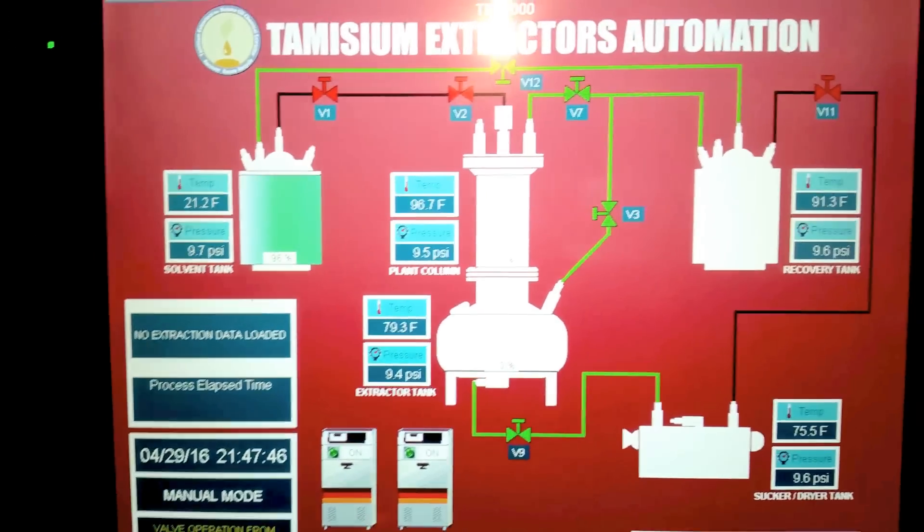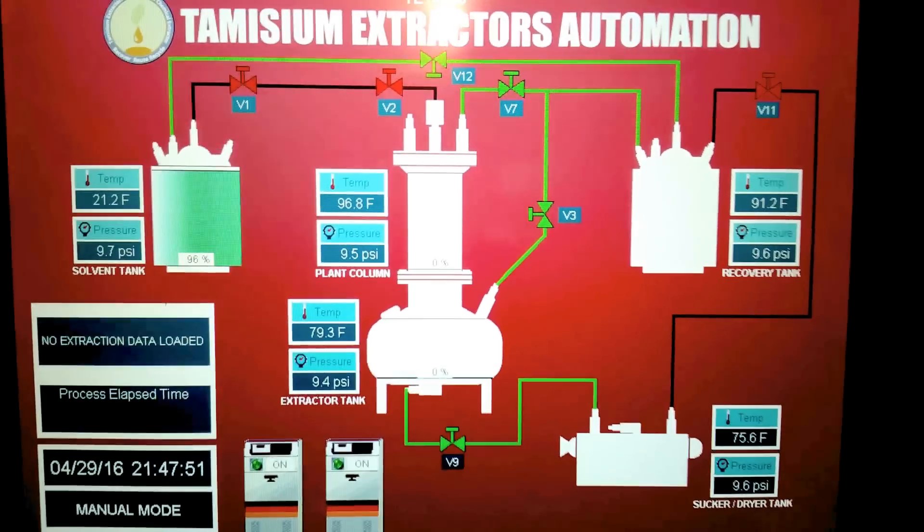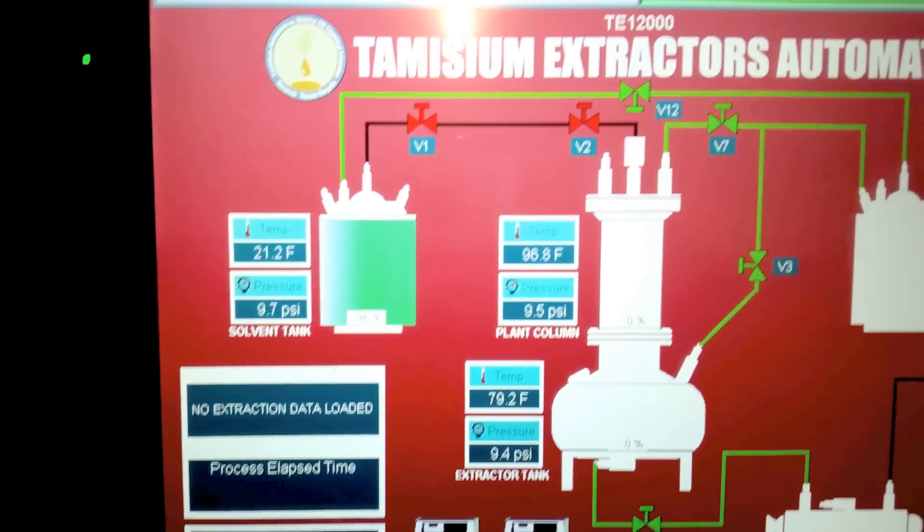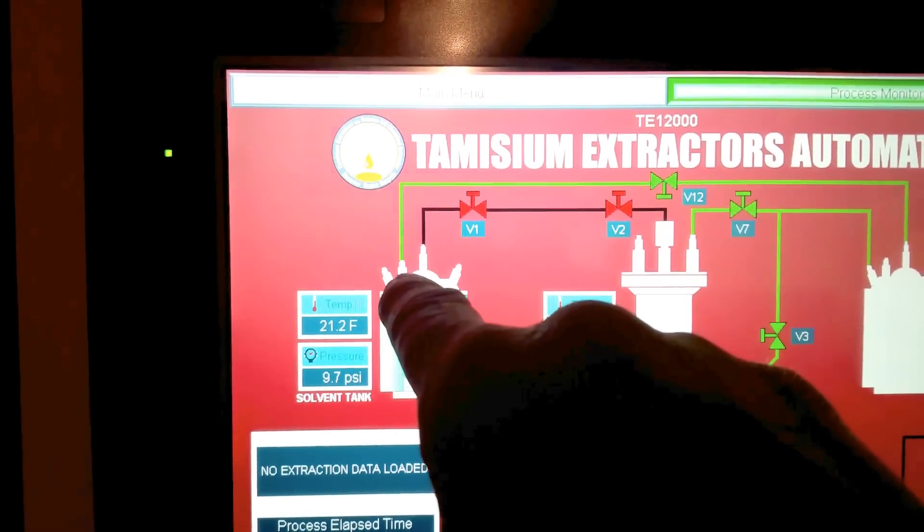Those are the only two tanks that you lose vapor in. But these tanks here and here, we're recovering the vapor from them. The vapor's traveling back through the green lines back into the liquid input—I mean the vapor input.